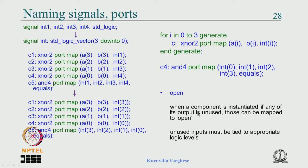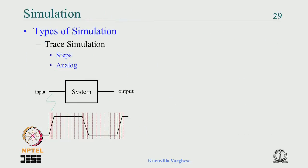When instantiating a component, if a particular output is not used you must say 'open'. Do not leave any inputs hanging — unused inputs should be tied to the appropriate level. For an AND gate input must be tied to 1, and for an OR gate to 0.